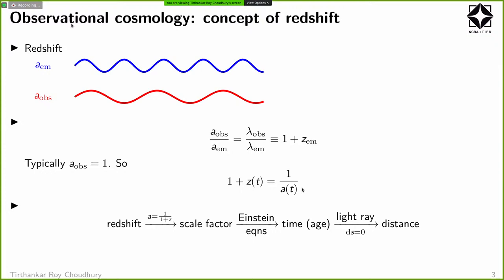This is a very powerful tool because cosmological observations let you measure the redshift of a distant object. The moment you measure the redshift, you basically know how small the universe was compared to today. This is quite profound and helps us gain a lot of knowledge about the properties of our universe. Redshift can be related to the scale factor almost by definition.